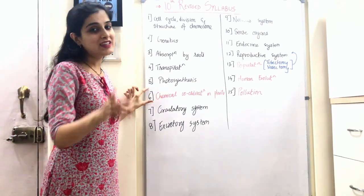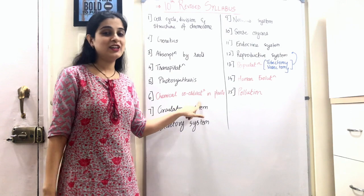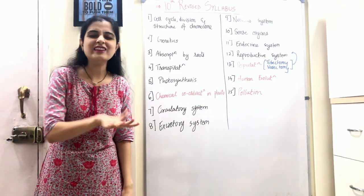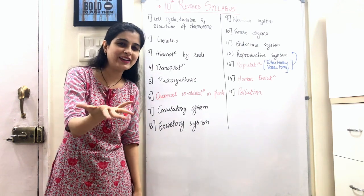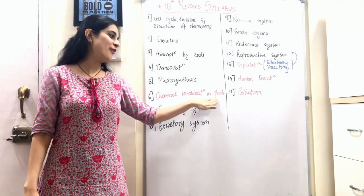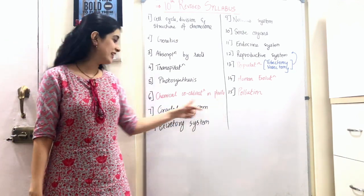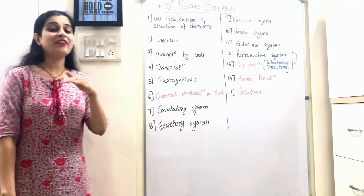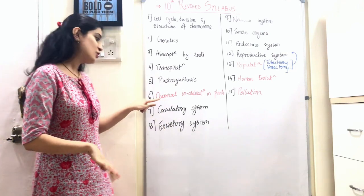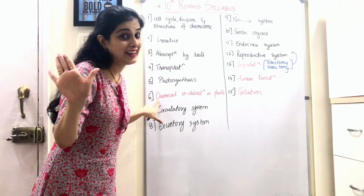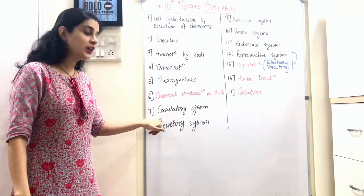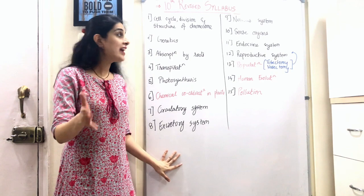Many students were asking me to upload Chemical Coordination, and I told them in the comment section that it's a very easy chapter — try doing it yourself. But actually it's not so important, and the council has the same opinion. The council has scraped off Chemical Coordination for your exam. So Chemical Coordination in Plants — you don't need to study that chapter; it is deleted.